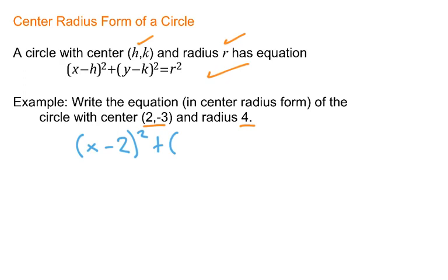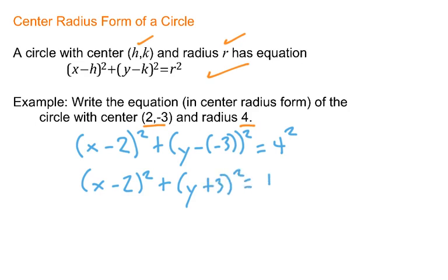Now, watch what happens here very carefully. My value for k is negative, so I'd have y minus negative 3 squared equals 4. That's my radius. I replace the r with 4. And the only thing I have to remember is that subtracting a negative is the same as adding a positive.